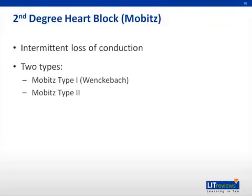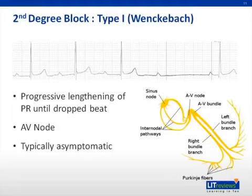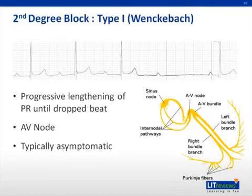Second degree heart block is the intermittent loss of conduction. This shows up on the EKG as a P wave without a corresponding QRS complex following it. There are two types, classified as Mobitz I and Mobitz II. Mobitz I, also referred to as Wenckebach, is a progressive lengthening of the PR interval until an interruption occurs. Physiologically, the AV node refractory period is prolonged; each impulse reaches the AV node when it is partially refractory, resulting in progressive lengthening of the PR interval. Eventually an impulse reaches the AV node during its absolute refractory period and fails to conduct. The P-to-P interval remains constant, but the PR interval lengthens each time.